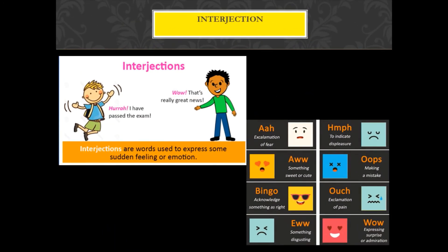What are interjections? Interjections are words used to express some sudden feeling or emotion — out of fear, happiness, sadness, pain, surprise, or when we make a mistake. For example, your friend gives you very good news and you react by saying, 'Wow, that's really great news!' That 'wow' is the interjection. Or 'Hooray, I have passed the exam!' — you are so happy and you react by saying 'hooray.' That is the interjection.